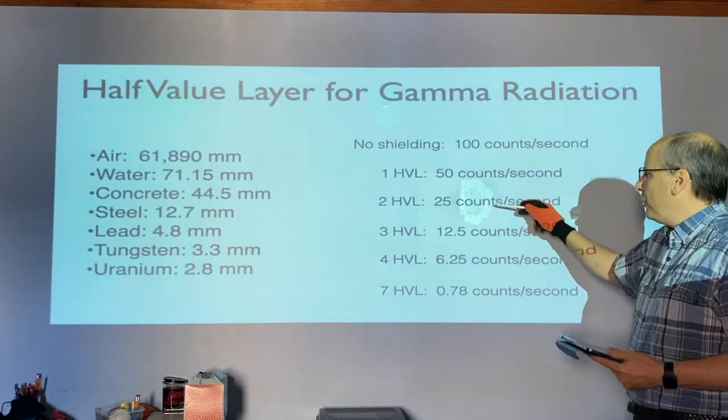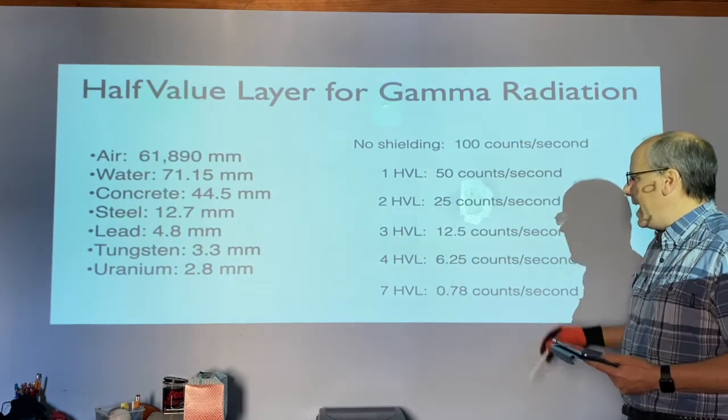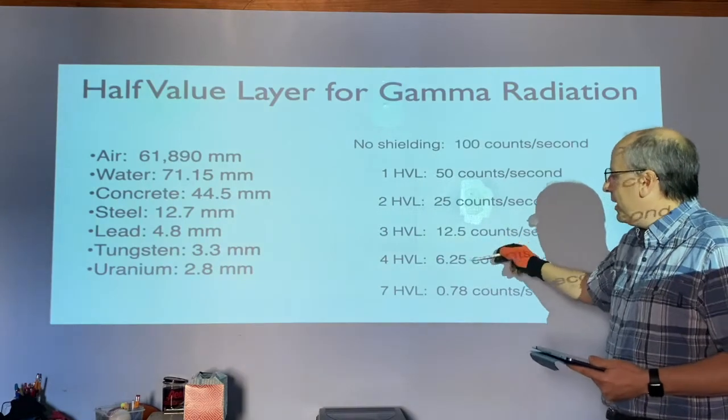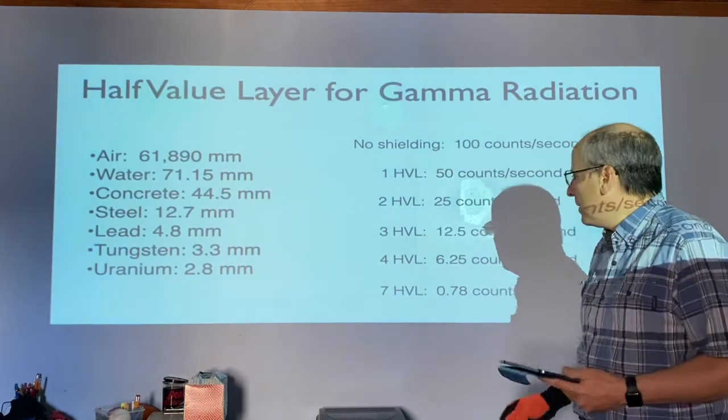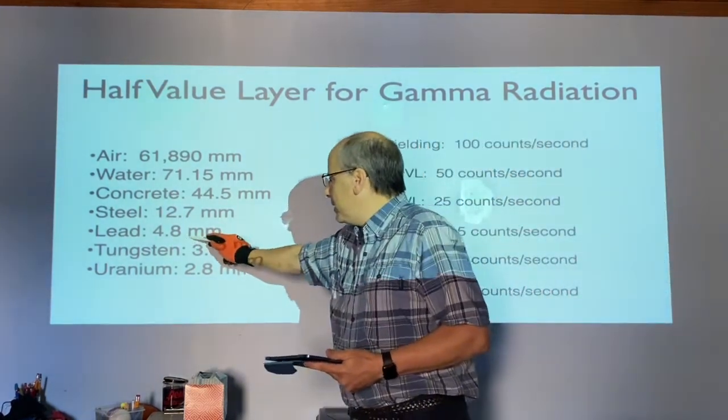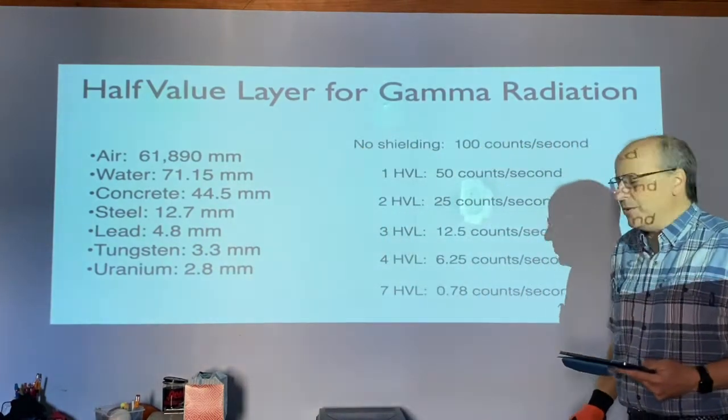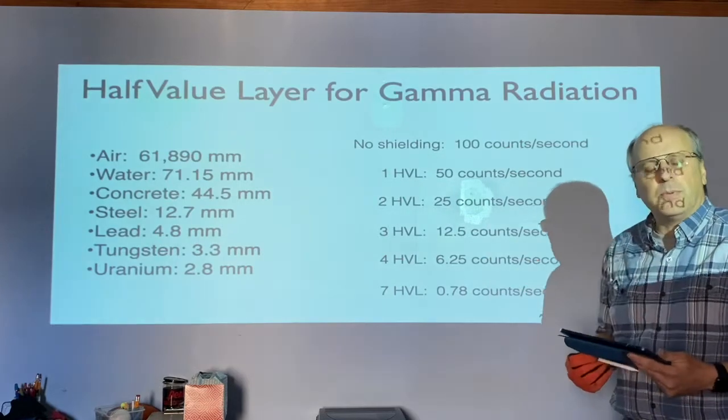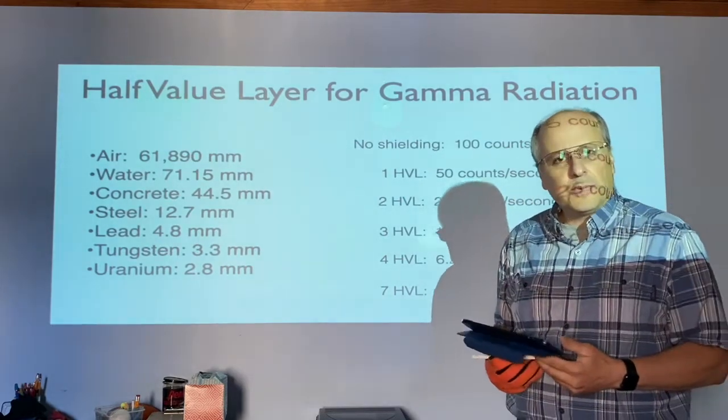If you had two, it would cut it in half again. Three cuts it in half again. Four cuts it in half again. So if you did four times this number, it would tell you how much lead you need to get the radiation down to only 6.25 counts per second.